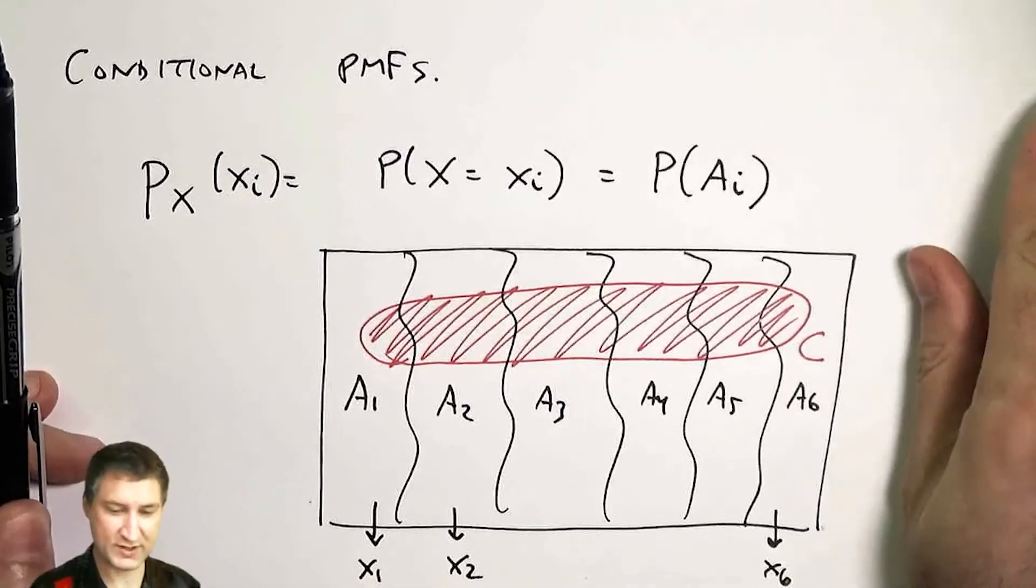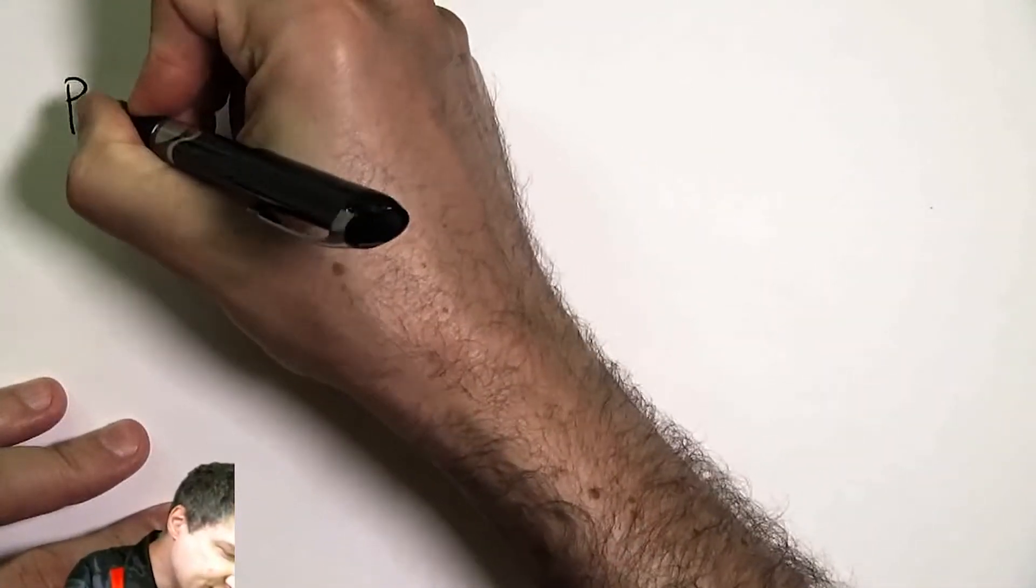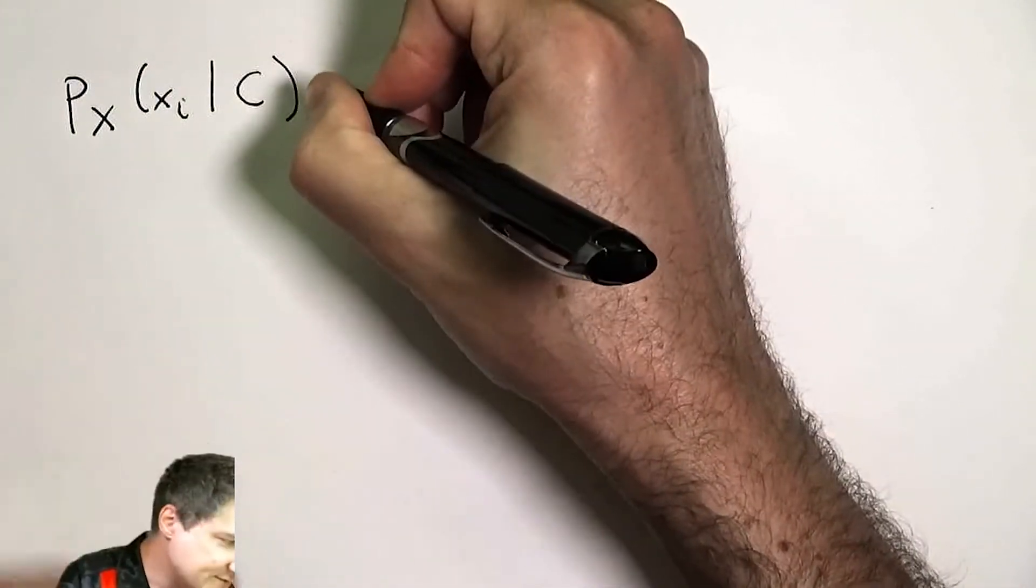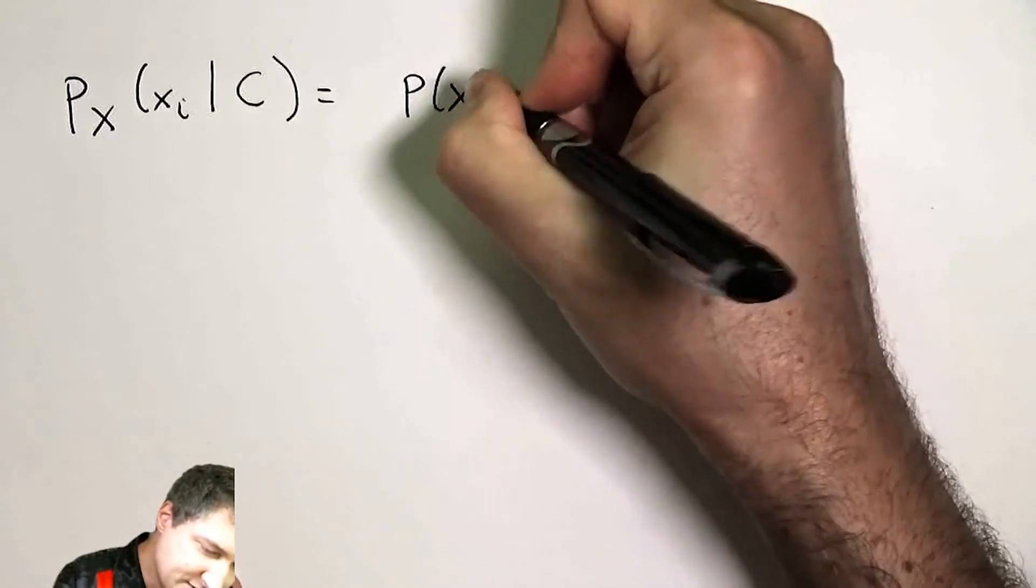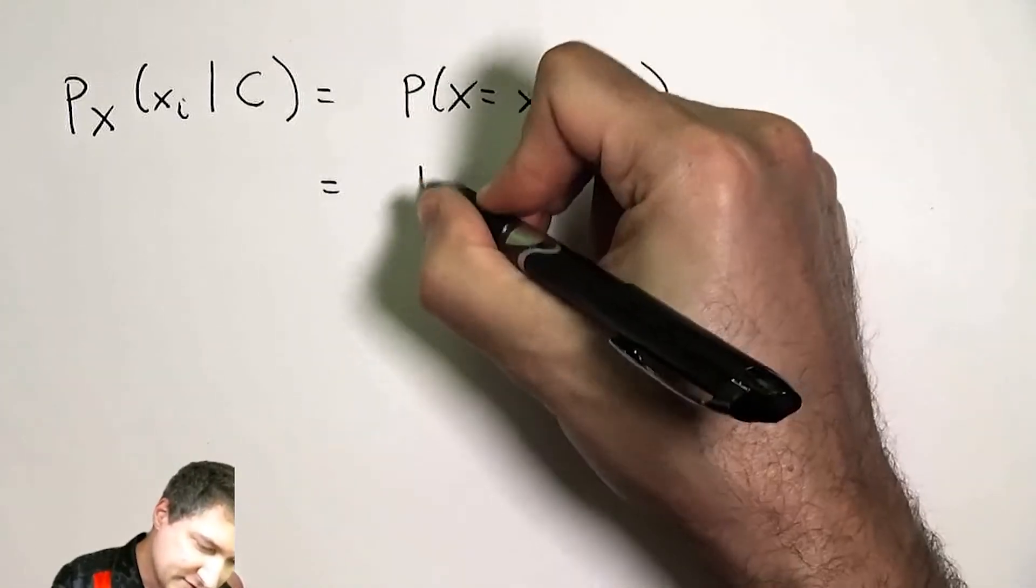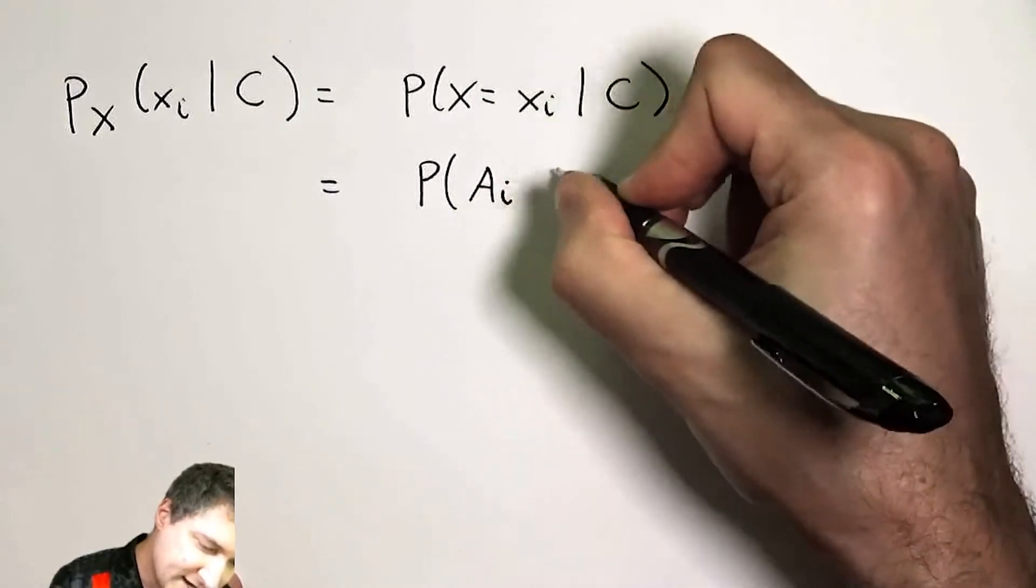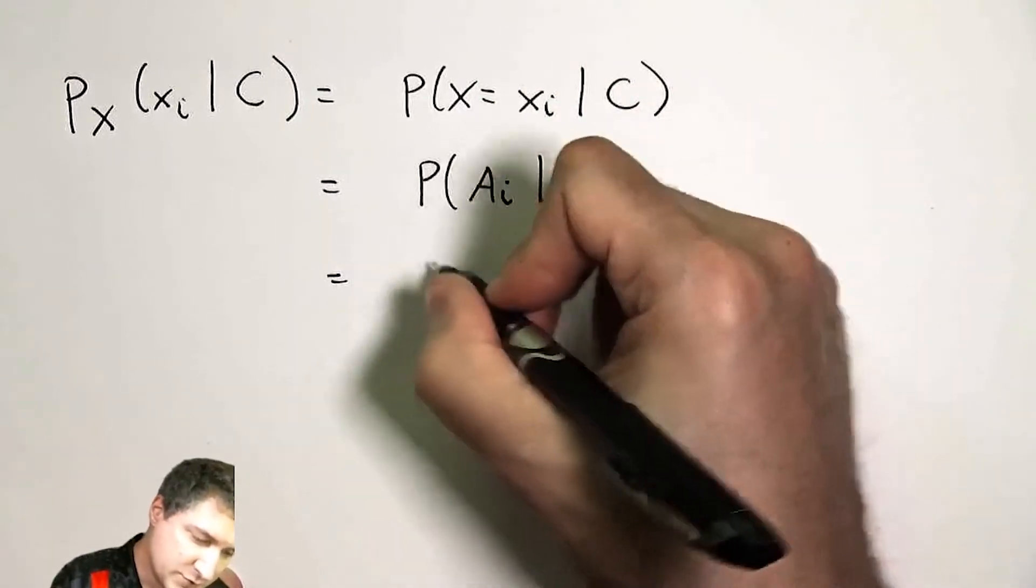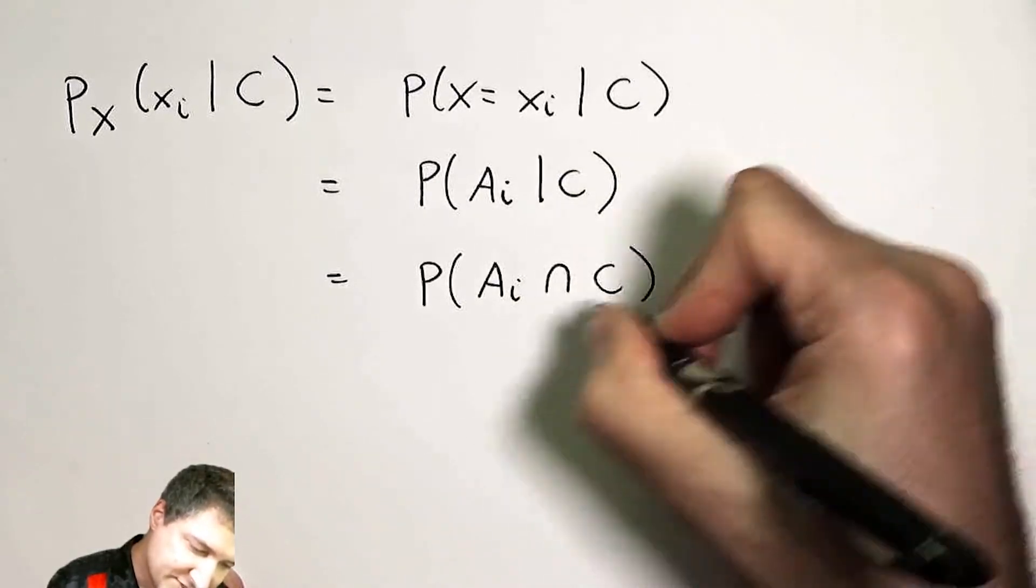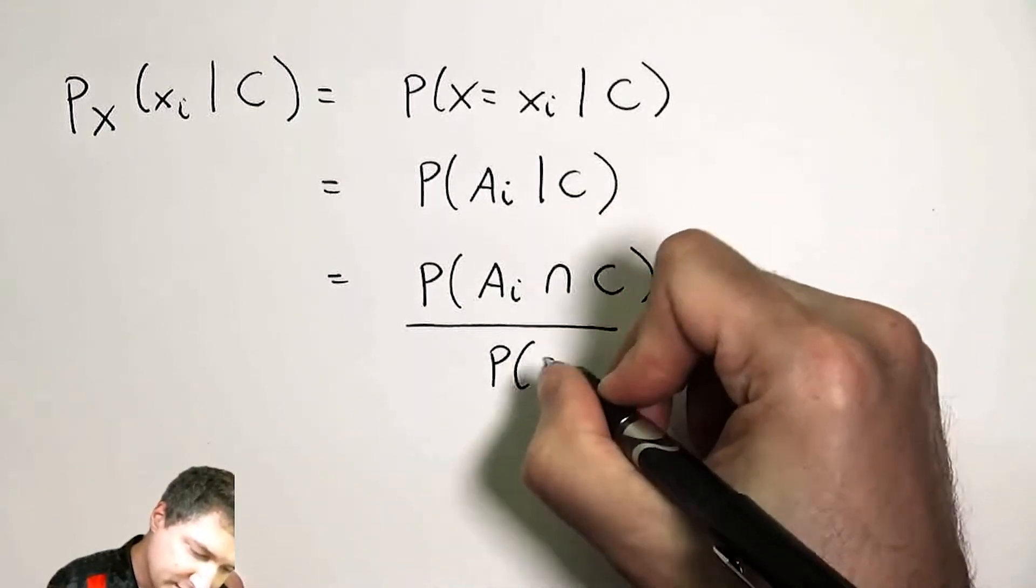So we can use the tools we already have to answer this question. The probability mass function conditioned on this new event is nothing more than the probability of A_i given C, which we already know is the probability of the intersection over the probability of the whole thing.